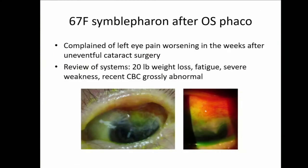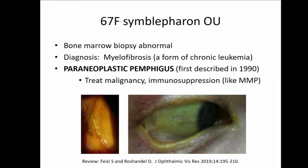A 67-year-old female had symblephron after left eye cataract surgery, complaining of pain in the weeks after routine surgery. On review of systems, she had a 20-pound weight loss, fatigue, and severe weakness. Recent CBC was grossly abnormal and bone marrow biopsy came back as myelofibrosis, a form of chronic leukemia. Her diagnosis was paraneoplastic pemphigus, first described in 1990, with only about 18–20 case reports in the literature. Treatment requires addressing the malignancy and immunosuppression, which can have conflicting goals. Unfortunately, she passed away a few months after diagnosis.